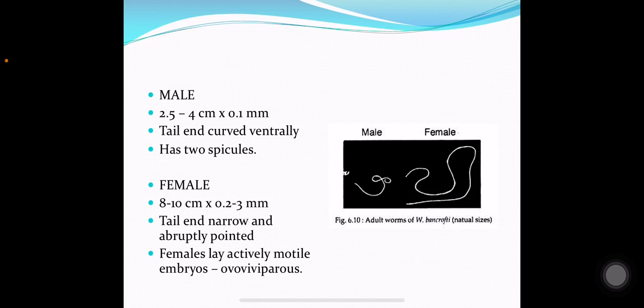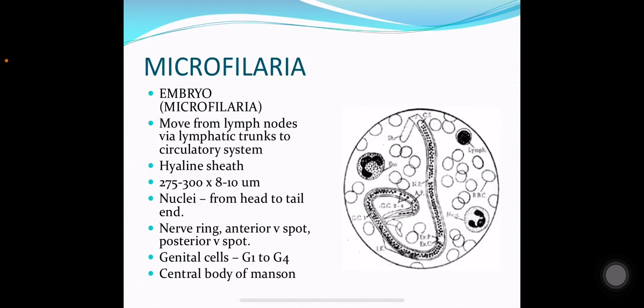The females lay actively motile embryos which are known as microfilaria. The females are ovo-viviparous. Microfilaria are the larval forms of filarial worms which are released by fertilization. Microfilaria of different filarial worms vary in the distribution of nuclei, the presence of sheath and the presence of specialized cells. These different features in the microfilaria help in identifying the species.